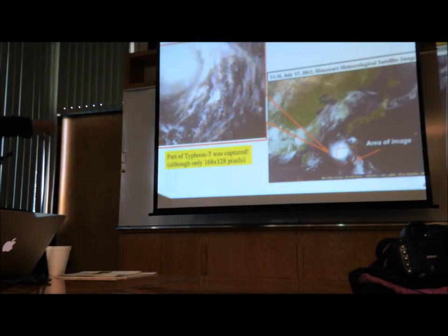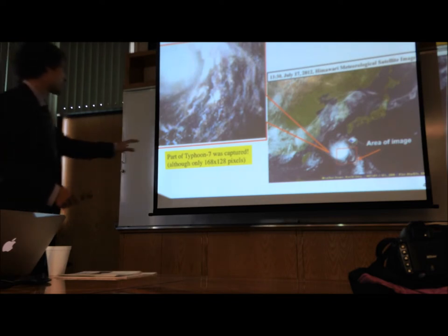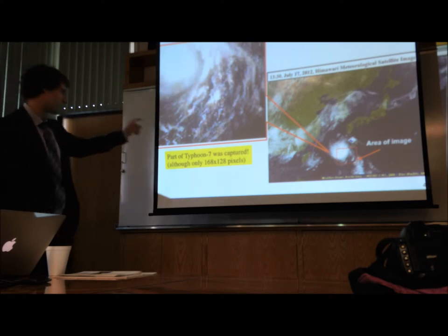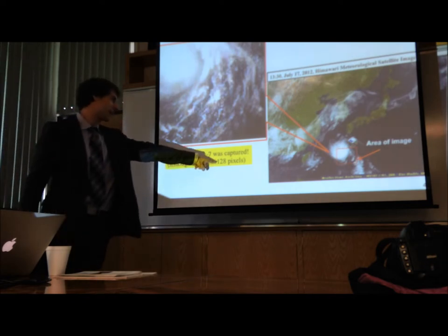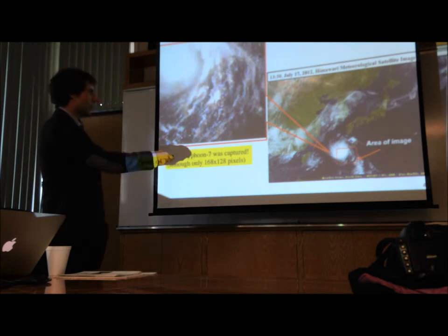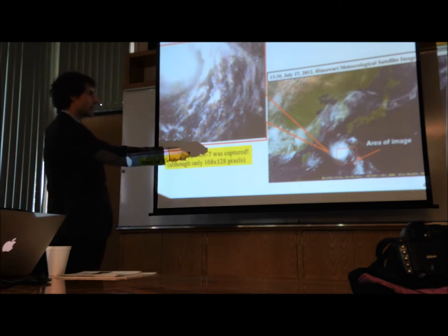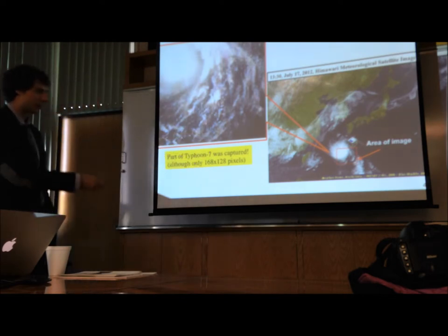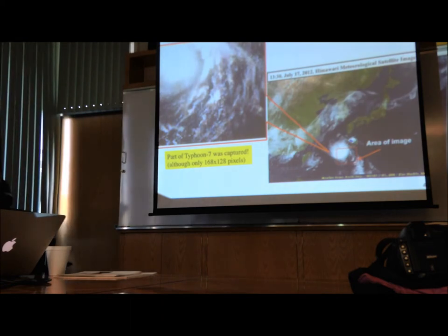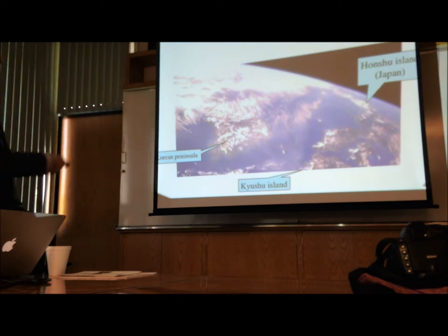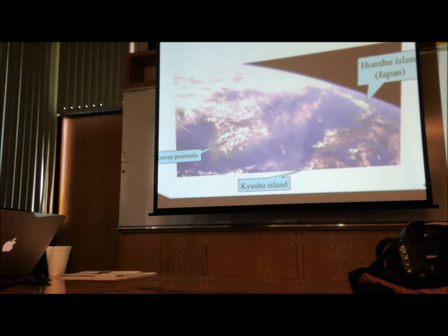We took some pictures of the Earth, confirming that we were there. This is the picture from our satellite, very low resolution. We had a very small, low resolution camera, only 168 by 128 pixels. This is the area that we captured when we overlaid this on an image taken by an actual professional meteorological satellite. We just took a picture that small. But we also were able to capture Japan. This is Honshu Island, and this is Kyushu Island of Japan, and the Korean peninsula.